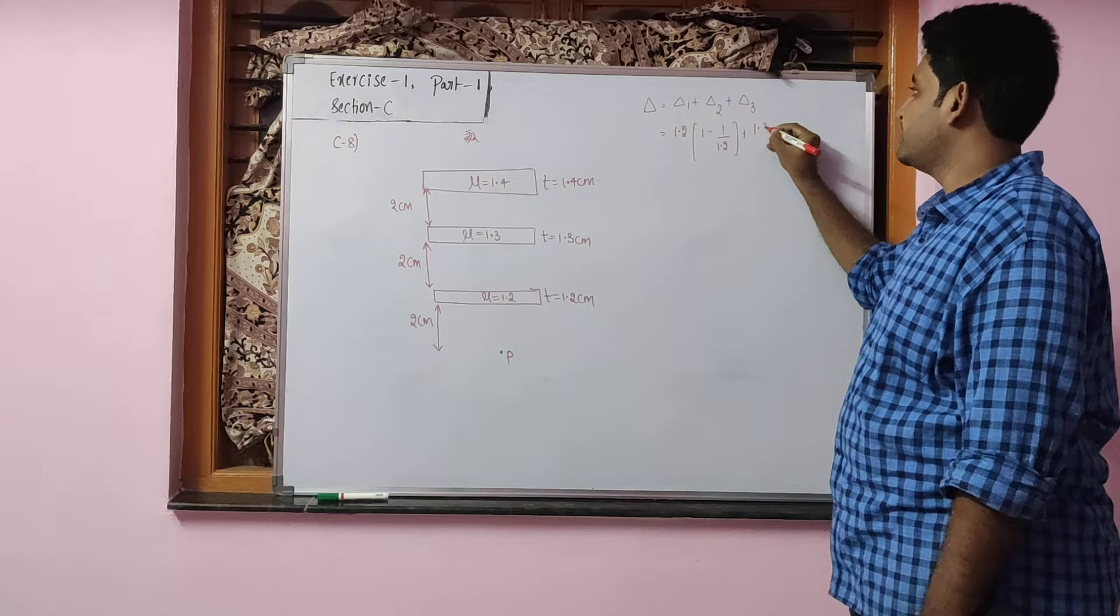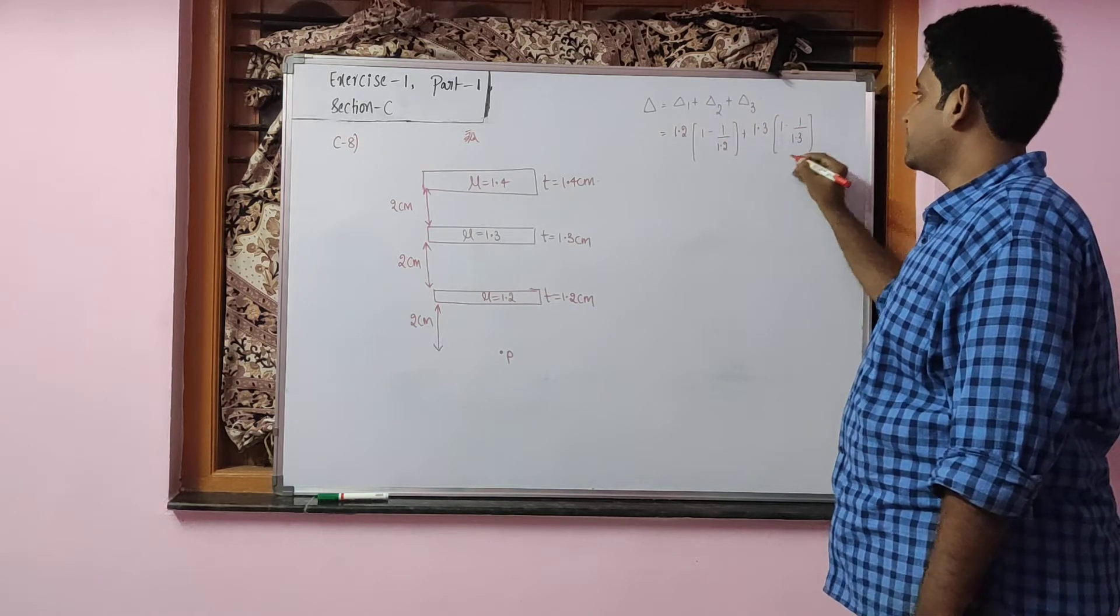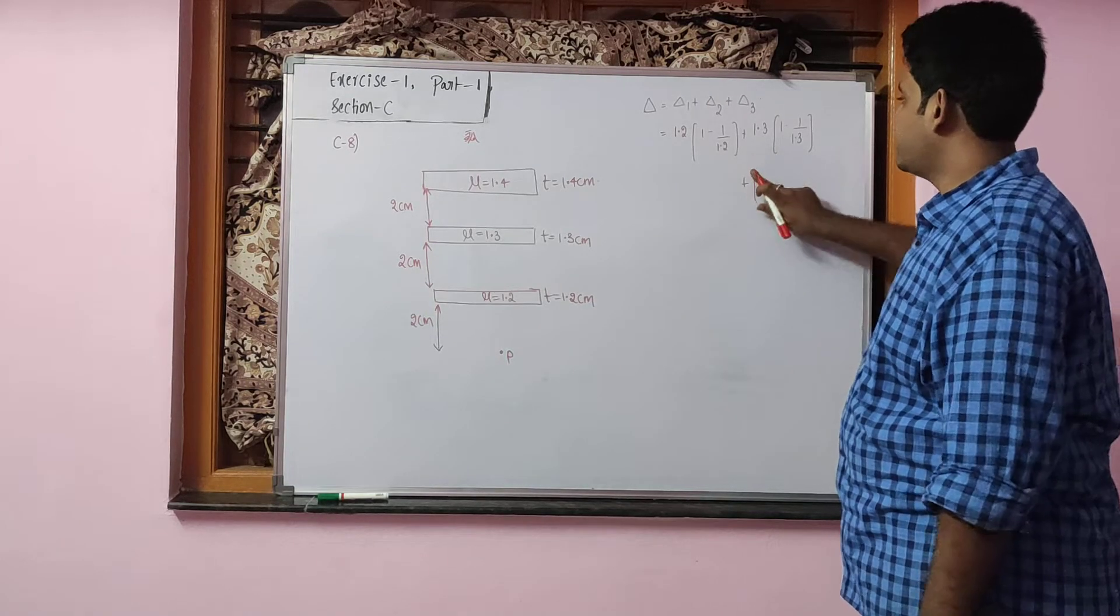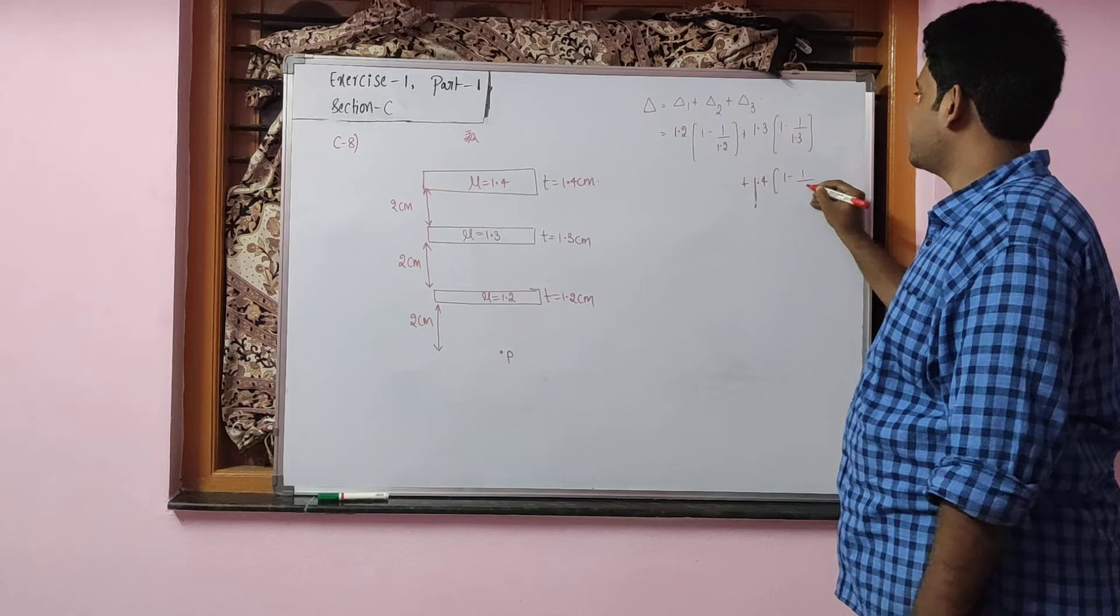Similarly, 1.3 into 1 minus 1 by 1.3 for the second glass slab, plus 1.4 into 1 minus 1 by 1.4 for the last glass slab.